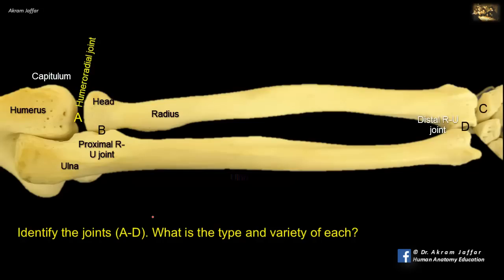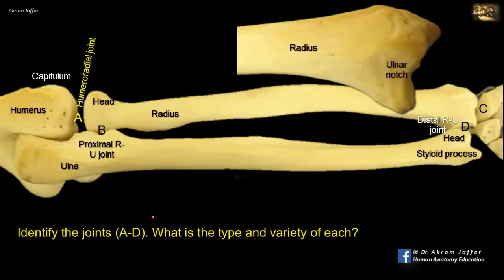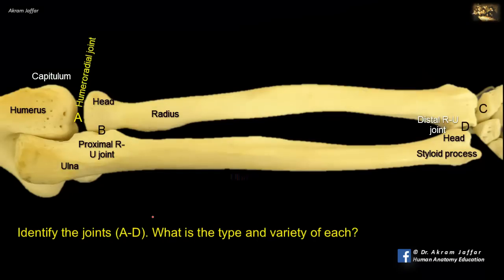Rotation here takes place during pronation and supination. So, D is another pivot joint between the head of the ulna. Note that the head of the ulna is located distally, while the head of the radius is located proximally. This is the styloid process of the ulna. The head of the ulna articulates with the ulnar notch of the radius at the distal radio-ulnar joint. This joint is separated from the capsule of the wrist joint, while the proximal radio-ulnar joint is continuous with the capsule of the elbow joint.